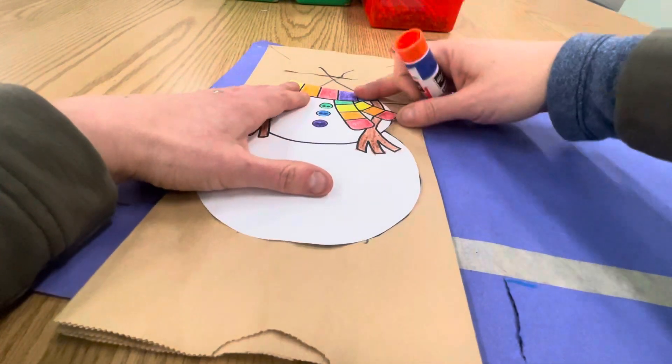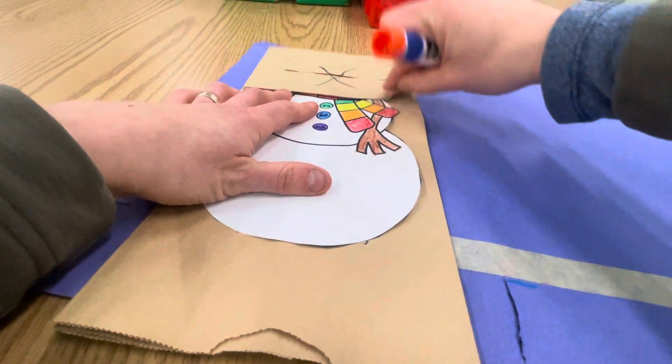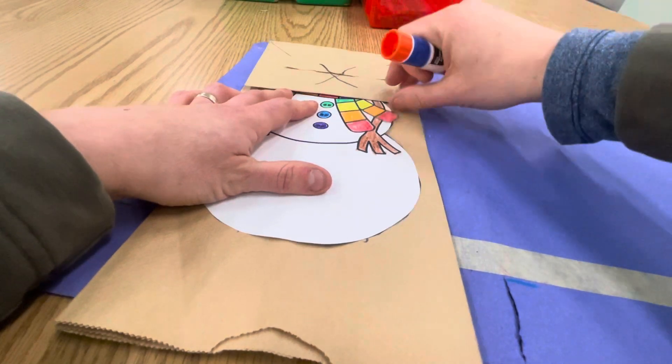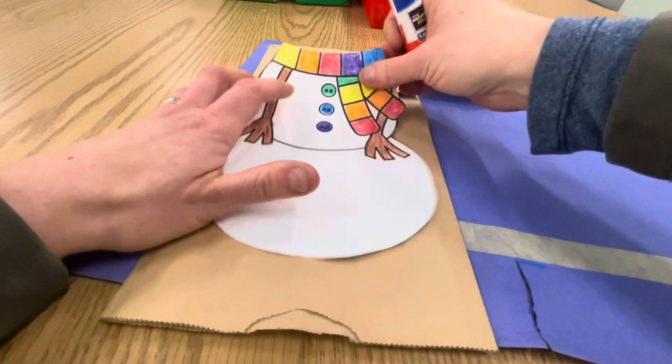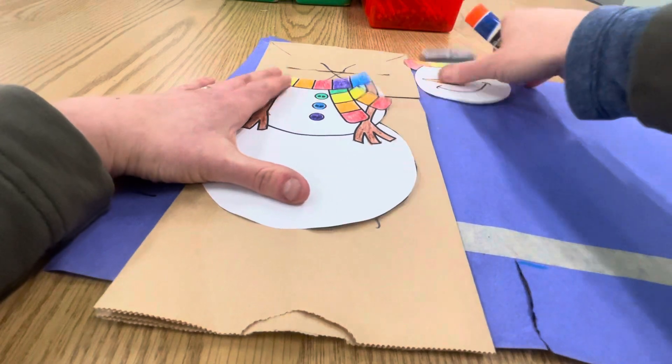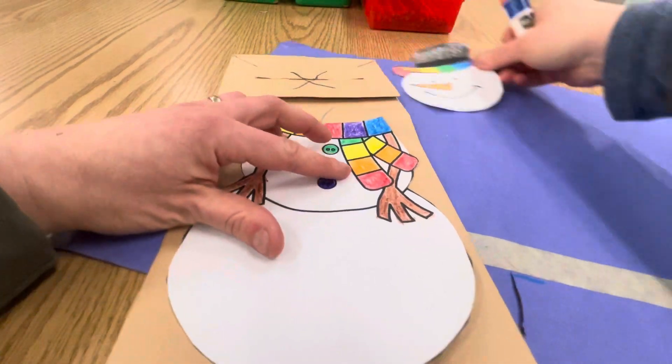We want to make sure that we don't glue the body over the flap because we want the flap to be able to open and close. That's what makes it a puppet. So be careful not to glue the body over the flap or the head over the flap. We don't want to do that.